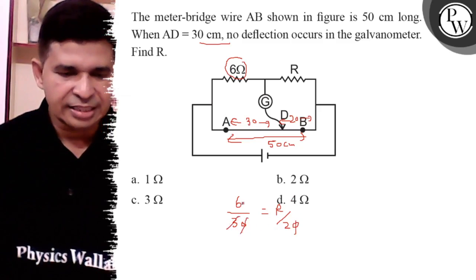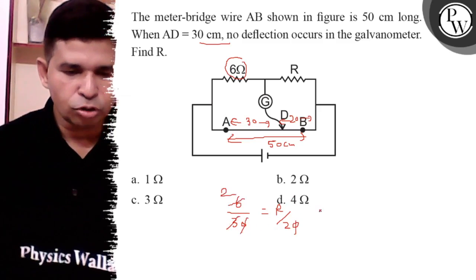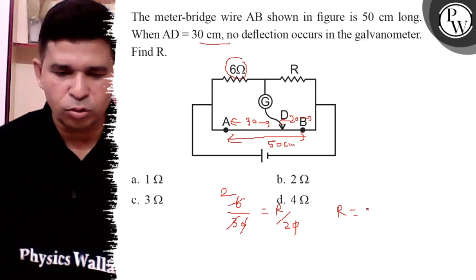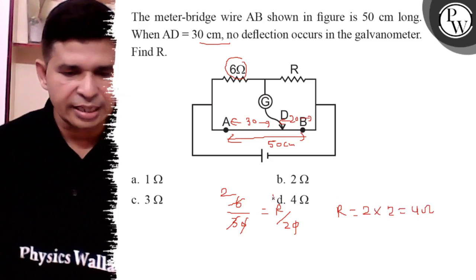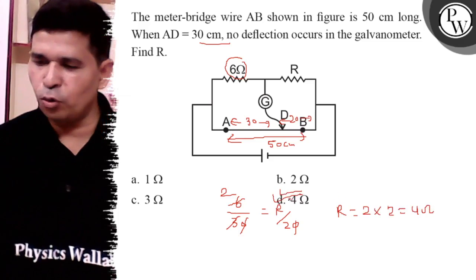Zero cancels, 3 into 2, so definitely R is equal to 2 times 2, which is 4 ohms. So the final answer is D. Thank you, all the best.